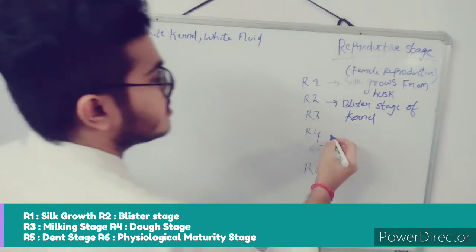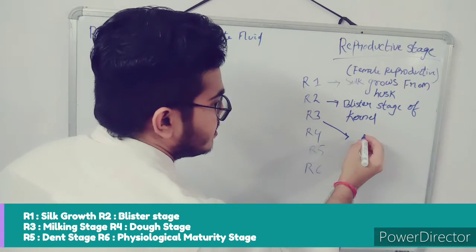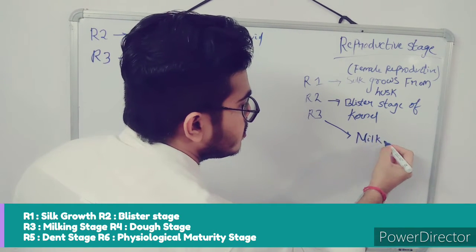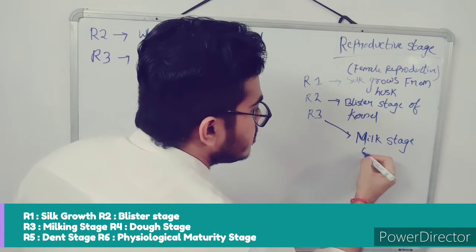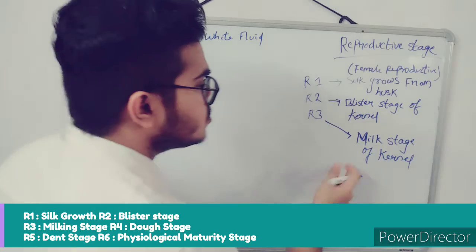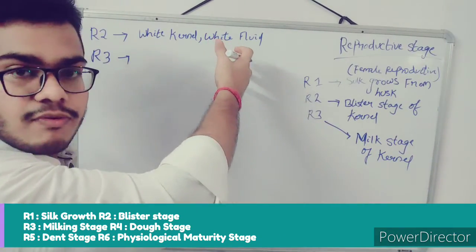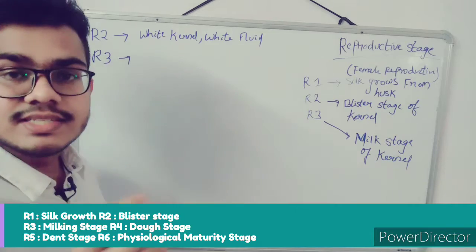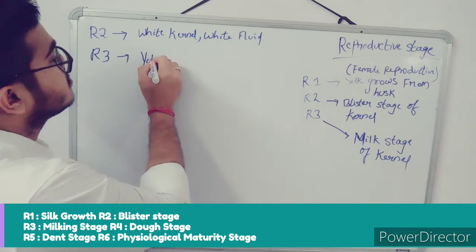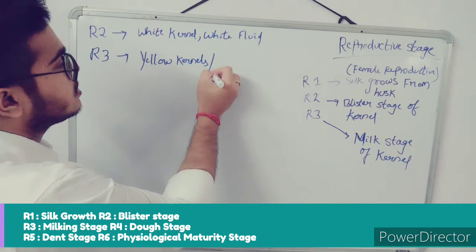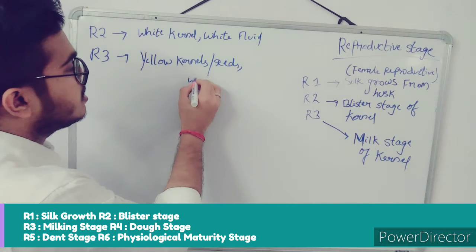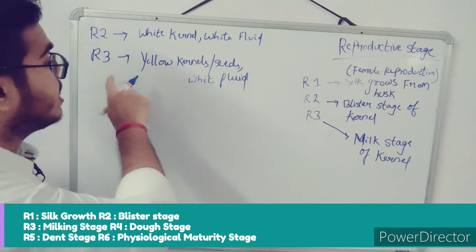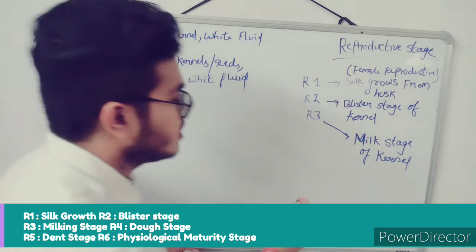R3 is the milk stage of the kernel. The amount of white fluid inside the kernel increases in this stage, but the kernels become slightly yellow. So in R3, you have yellow kernels with white fluid still present inside each kernel.